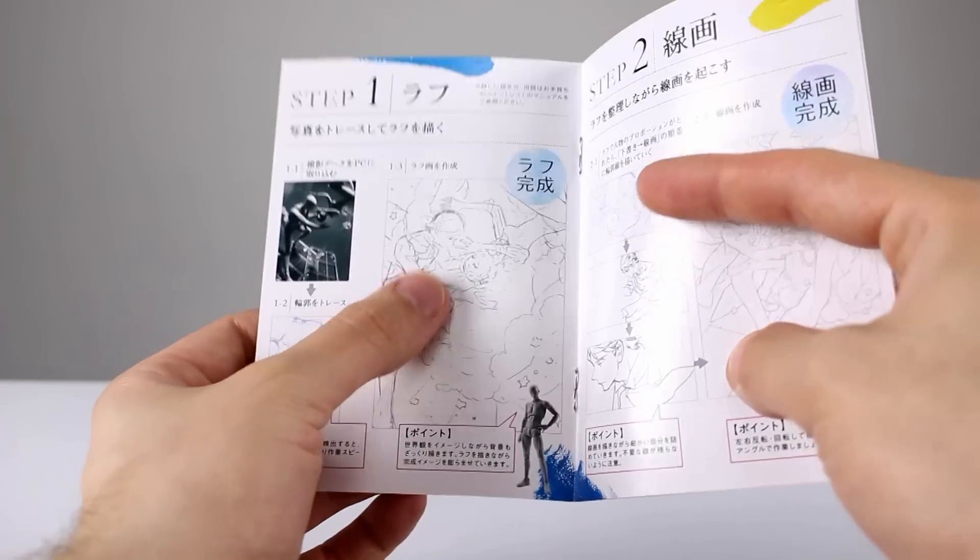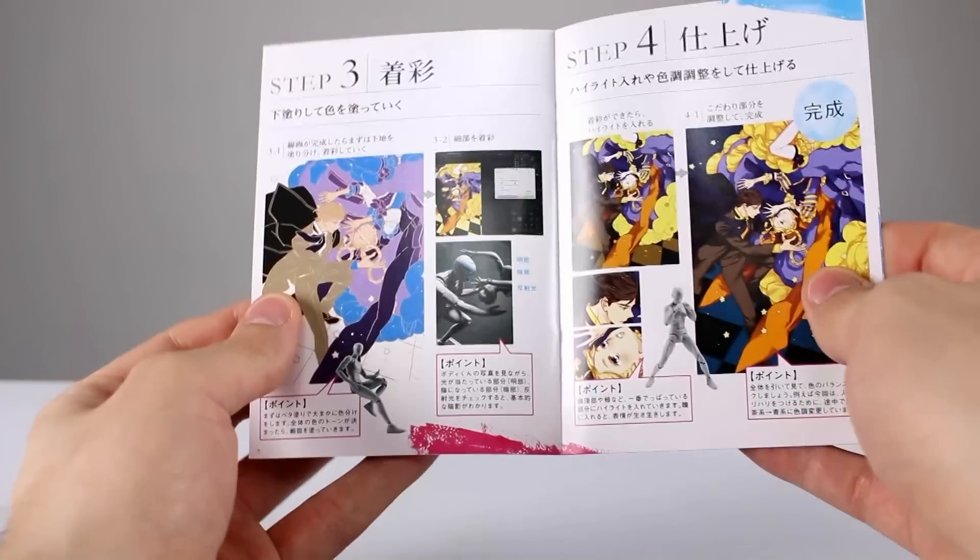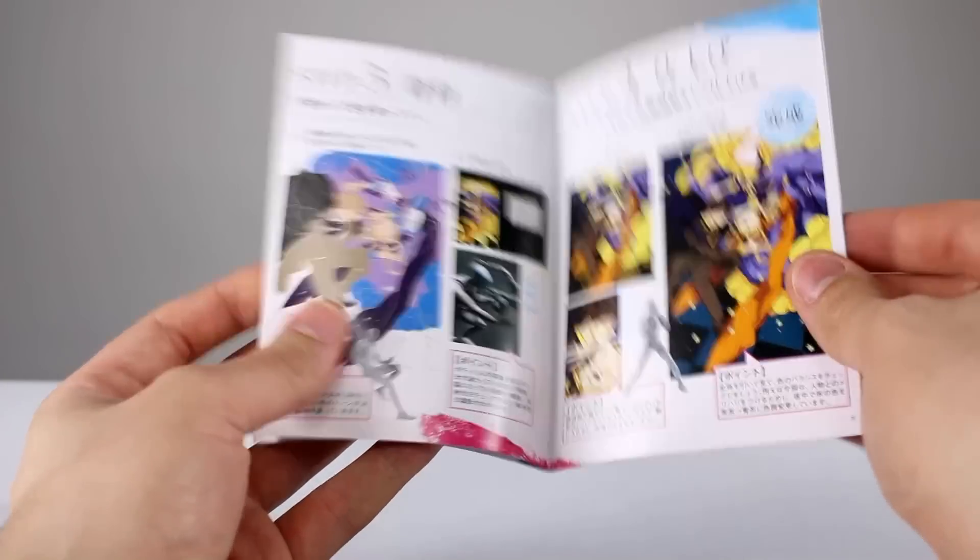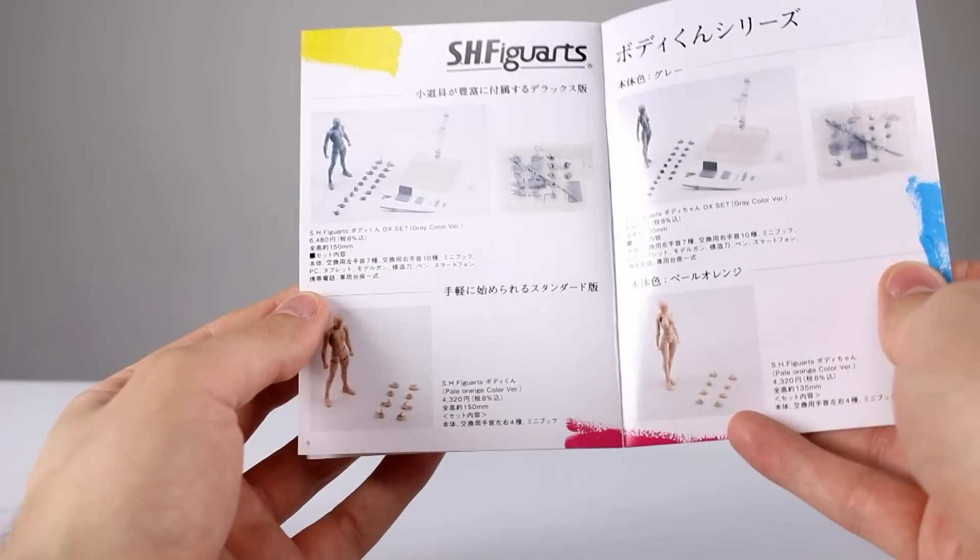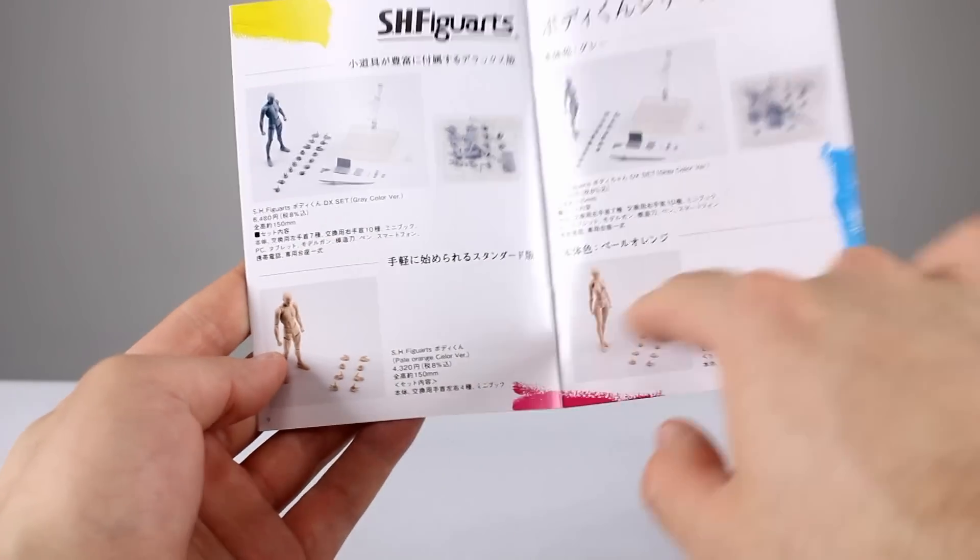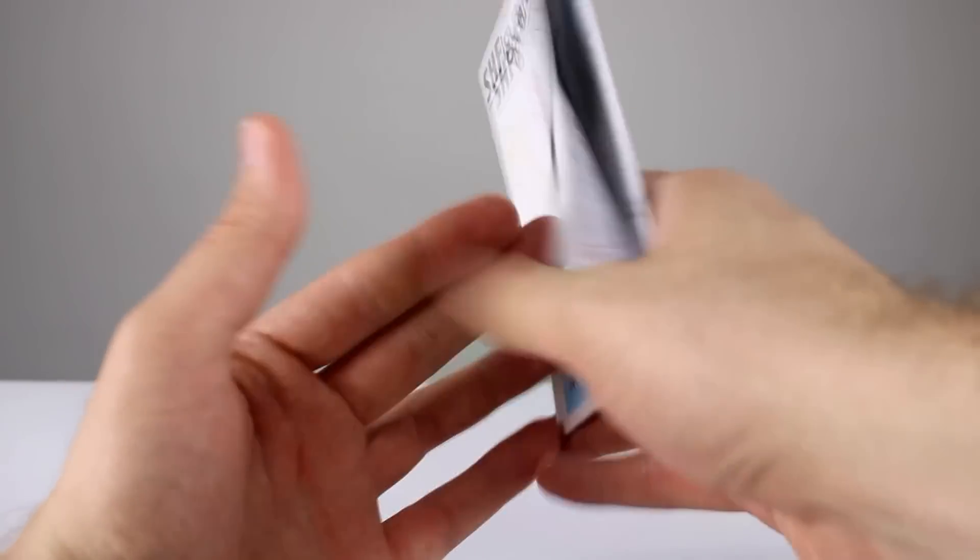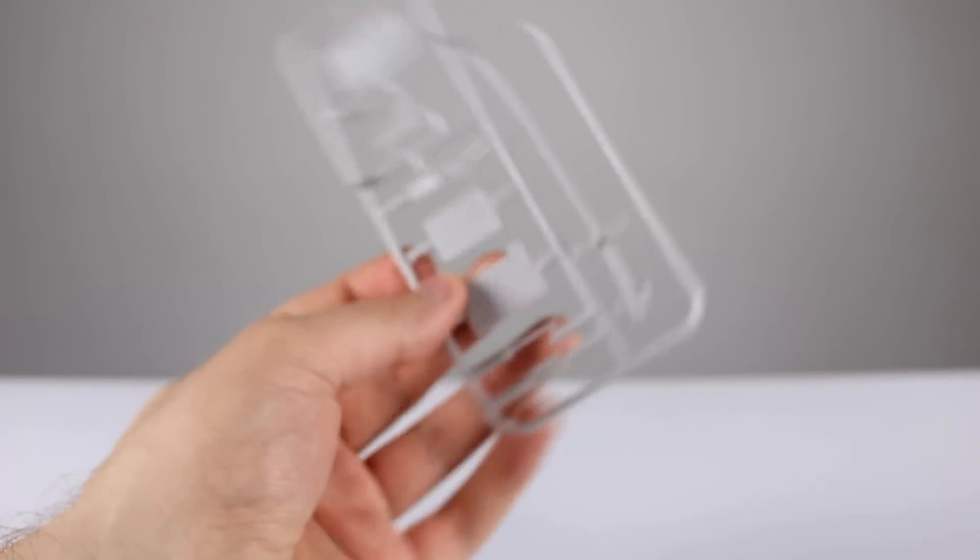That's what this kind of thing is for. It shows the two DX versions in gray and then the two normal versions in the skin tone they call it pale orange, but it's skin tone. So it's just a nice little booklet to come with the figure, don't see that very often. Now in terms of other accessories, we have this tree of accessories.